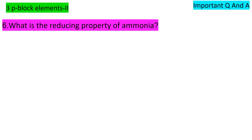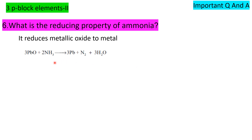What is the reducing property of ammonia? Ammonia reduces metallic oxides to metals. For example, lead oxide is reduced to lead. The equation is: 3PbO + 2NH₃ → 3Pb + N₂ + 3H₂O. This shows the reducing property of ammonia.